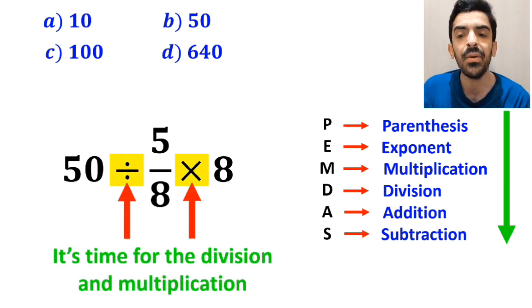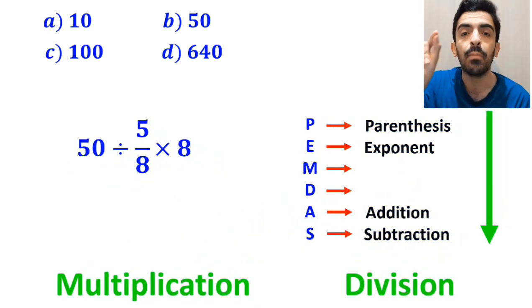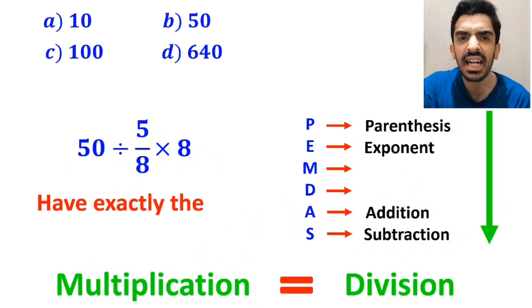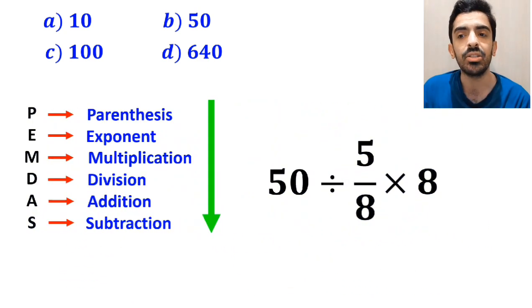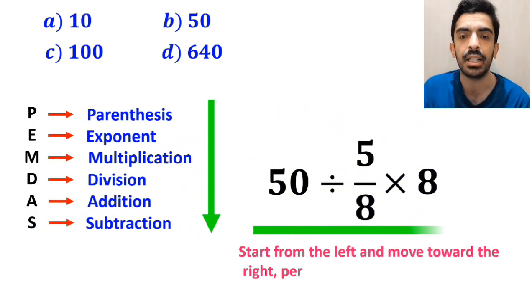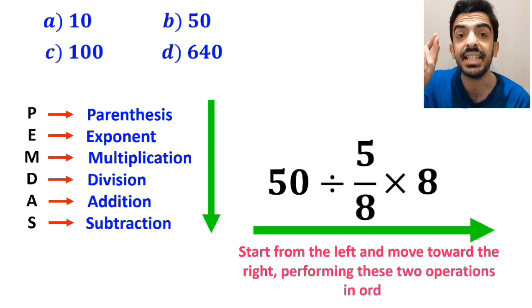However, it's very important to note that according to the PEMDAS rule, multiplication and division have exactly the same level of priority. In this situation, the best strategy is to start from the left and move toward the right, performing these two operations in order.